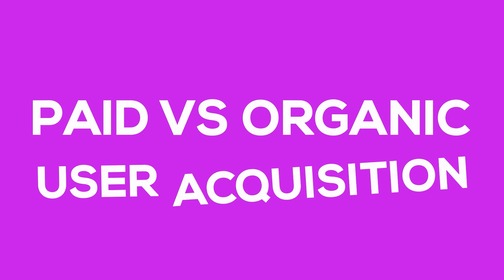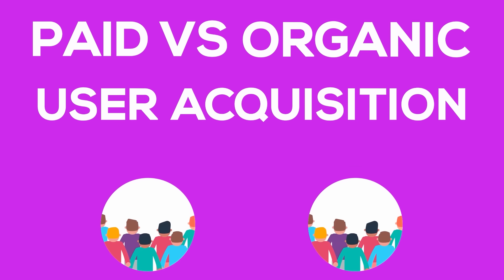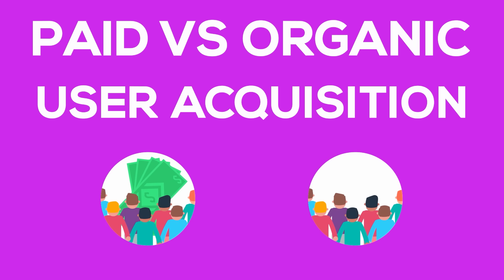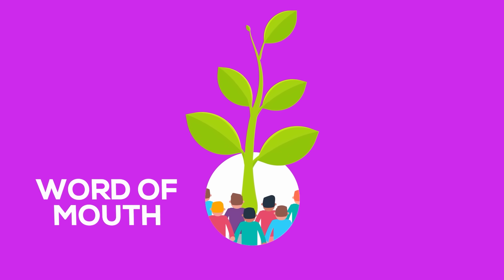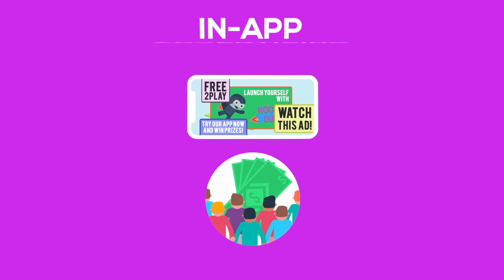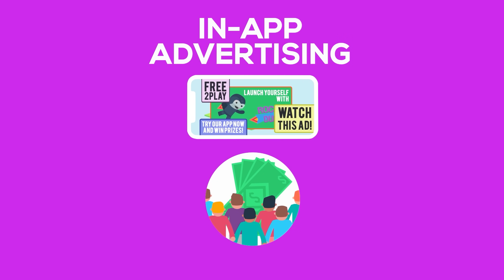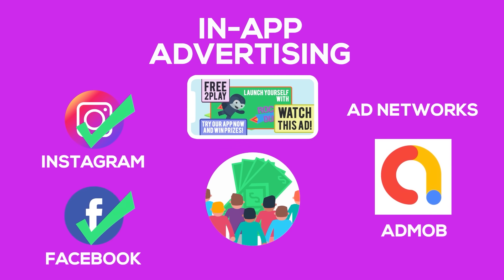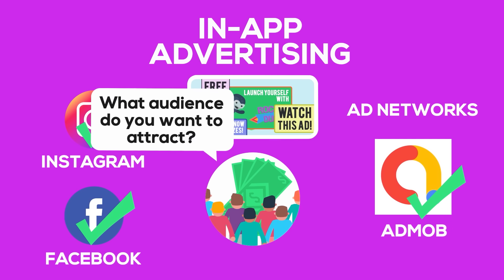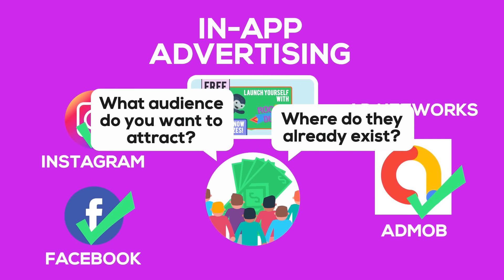How do mobile games get users? There are two methods: they either pay for them via advertising in other apps, or they gain them organically. Organic is always preferred, as the users are gained for no cost — these are typically users who heard of your game via word of mouth or other media. Paid users are acquired by placing in-app advertising in other apps. Social media sites like Instagram and Facebook are popular ad spend destinations, but you can also use ad networks like AdMob. The best choice really depends on the audience you're trying to attract and where they already exist.